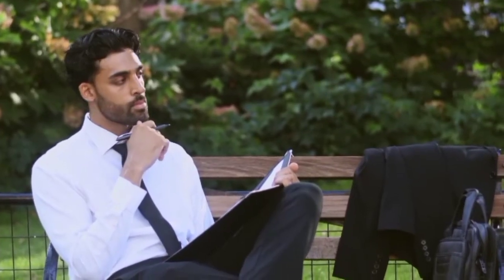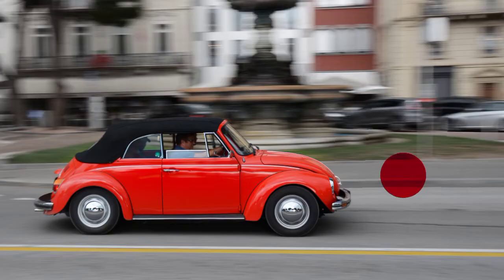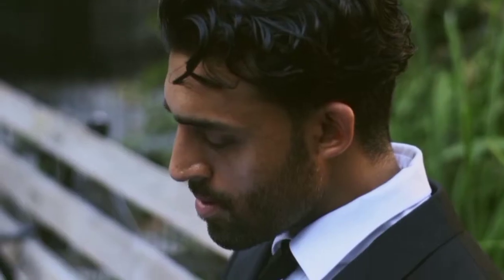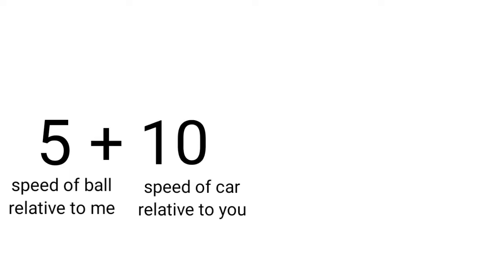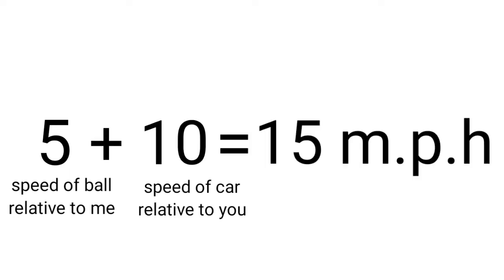Now you sitting there have a speed gun and you decide to measure the speed of the ball as I throw it. What would you measure the speed to be? Well, what you'd measure is the 5 miles per hour that I say I can throw the ball, plus the 10 miles per hour that my car is traveling at relative to you. So you'd measure 15 miles per hour, fairly straightforward, right?